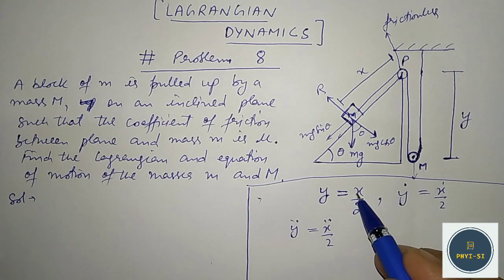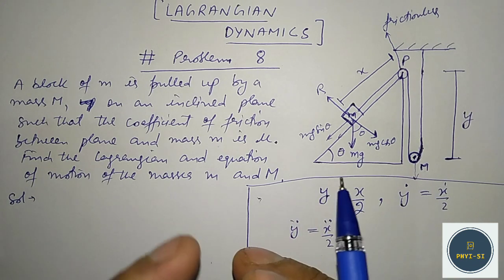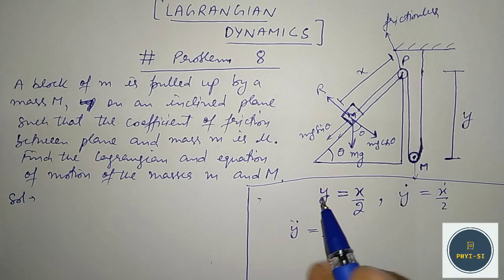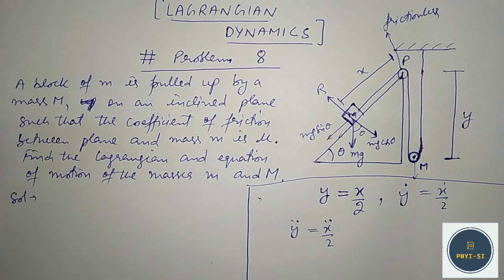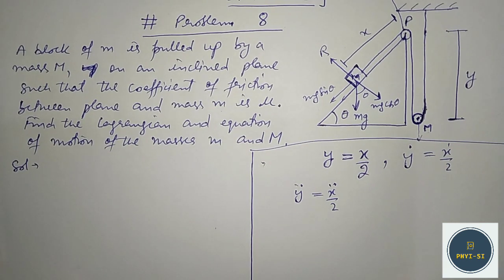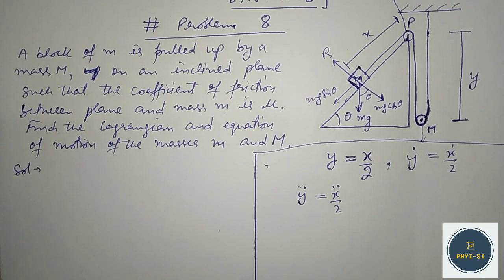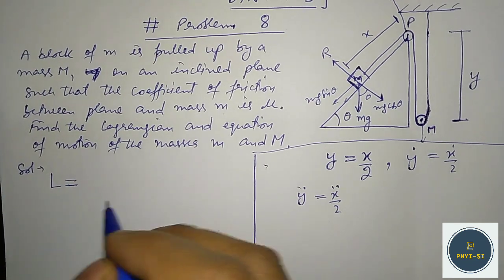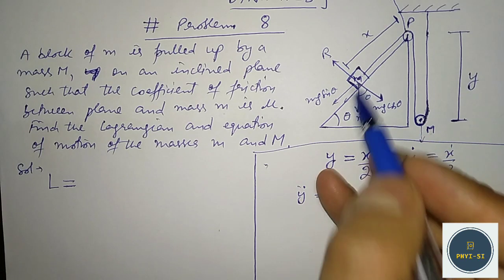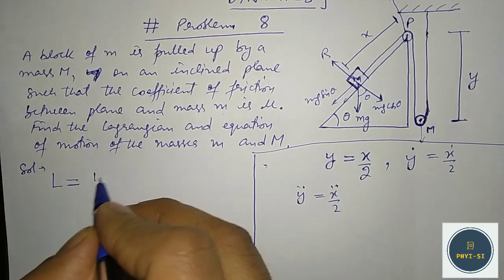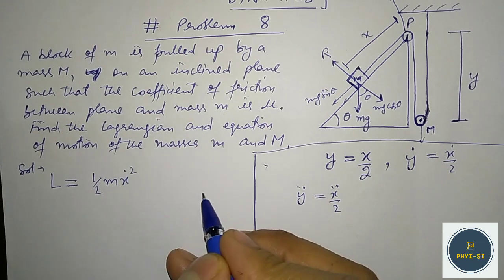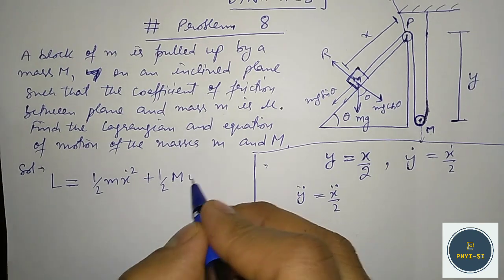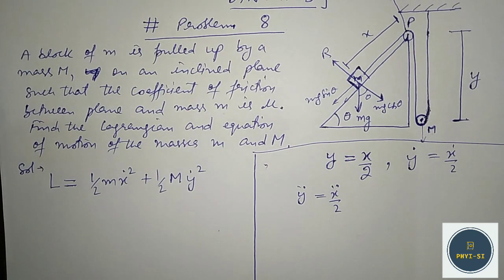By doing this, we are left with just one coordinate x. We only need to solve the equation for coordinate x. Now let's start finding the Lagrangian for this mass system. The kinetic energy will be: half of m times x-dot squared (for the small mass), plus half of capital M times y-dot squared (for the larger mass).